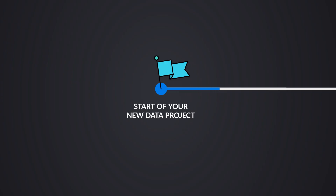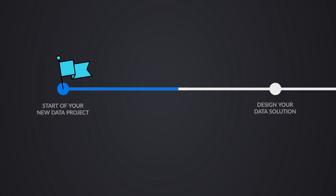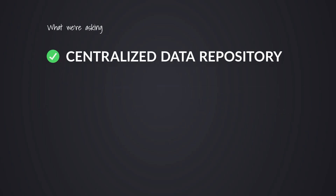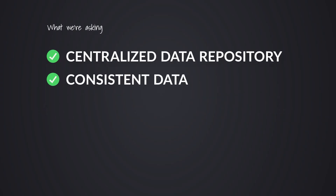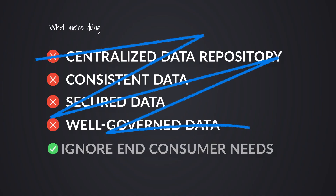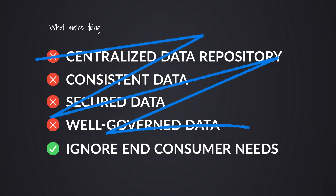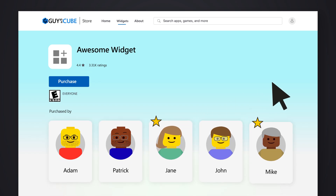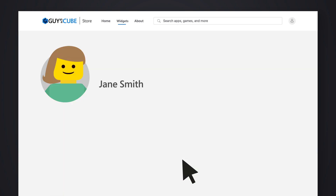Before you start designing your data solution, you need to think about what questions are you trying to answer. Of course, you want to create a centralized repository of data. You want the data to be consistent, secure, and well-governed. But a lot of times we start designing out these data solutions without talking to the people that are going to consume it — we have no idea what questions we're trying to answer. Are we trying to figure out how many widgets we're selling? How many loyalty members are making purchases? How many students are coming back next semester? We need to think about these clearly before we start designing the solutions.